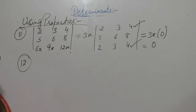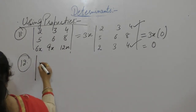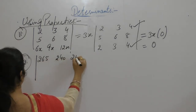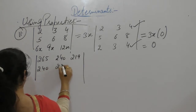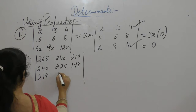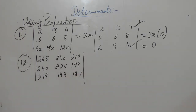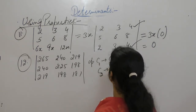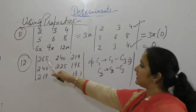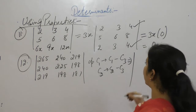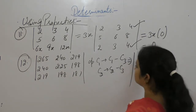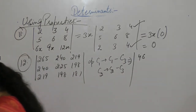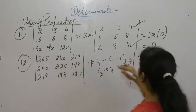Next one: without expanding, calculate the value of the determinant containing entries 290, 198, and 181. Apply column operations: C1 as C1 minus C3, and C2 as C2 minus C3. For C1 minus C3: 265 minus 2 gives 1, 9. For C2 minus C3: 40 minus 19.